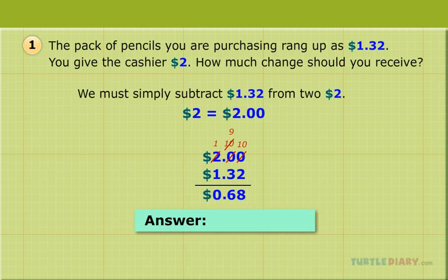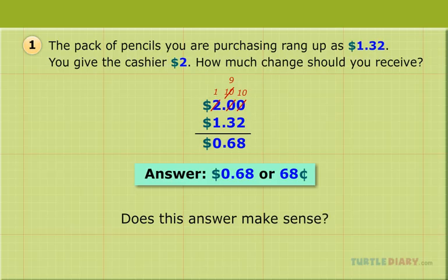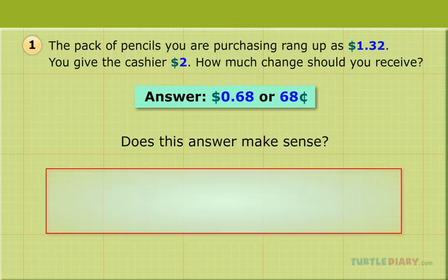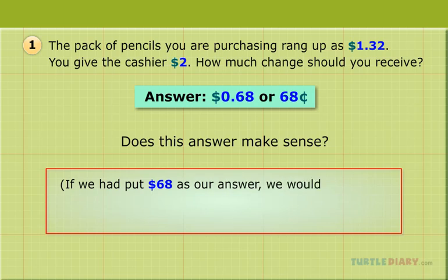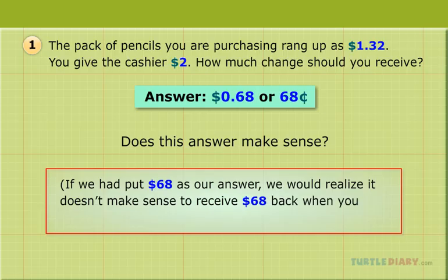Remember that $2 can be written as $2.00. Now simply subtract. The answer is $0.68. It is reasonable that you would receive $0.68 back as change. If we had put $68.00 as our answer, we would realize it doesn't make sense to receive $68.00 back when you only gave the cashier $2.00.